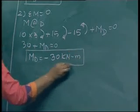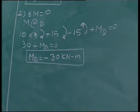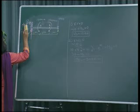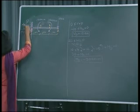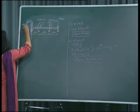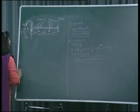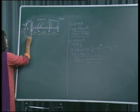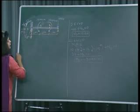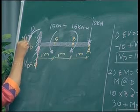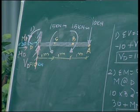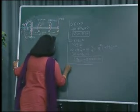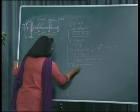The third is another couple but in the anti-clockwise direction, so it is negative. Plus MD (assumed clockwise) equals 0. So 30 plus MD = 0, giving MD = minus 30 kilo Newton meters. A negative value means our assumed direction for MD is wrong, so MD acts in the anti-clockwise direction. We correct the direction and record: VD = 10 kilo Newtons and MD = 30 kilo Newton meters anti-clockwise. Now we proceed to calculate shear force.